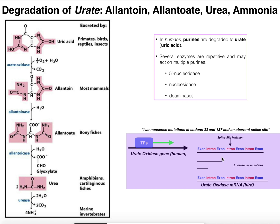And even if they did form, they would be much shorter due to these nonsense mutations. A nonsense mutation is a mutation that encodes a stop codon rather than a normal amino acid. When you encode a stop codon, translation stops and you end up with a much shorter protein. These really don't even form — you can't even fully splice out the introns due to the splice site mutation.